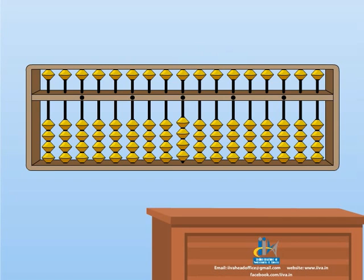Another question. 2 plus 5 plus 1 minus 2. Your answer is 6. For adding, take the beads towards the value bar. For subtracting, take the beads away from the value bar.